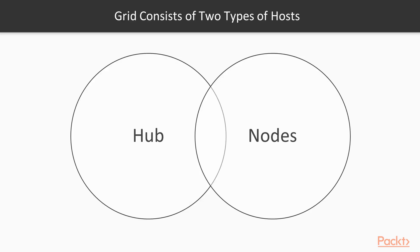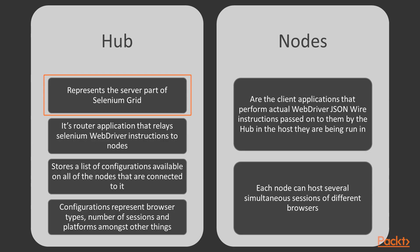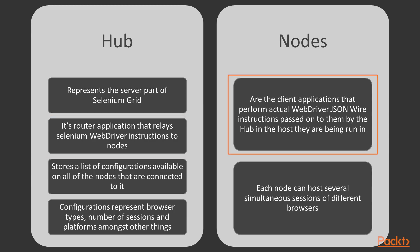Grid consists of two types of hosts: HUB and nodes. HUB is what represents the server part of Selenium Grid. It is a router application that relays Selenium WebDriver instructions to nodes. Nodes are the client applications that perform actual WebDriver JSON wire instructions passed onto them by the HUB in the host they are being run in.